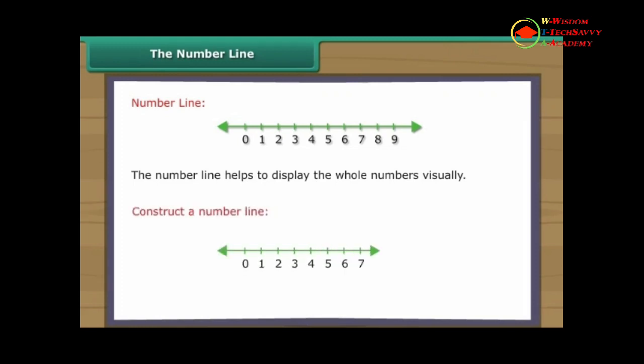The number line. The number line helps to display the whole numbers visually. To construct a number line, we simply draw a straight line and choose any point on the line and label it zero. This point is called the origin. We then choose some convenient length and moving to the right, mark off consecutive intervals, parts, along the line starting at zero. We label each new interval end point with the next whole number.